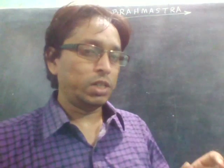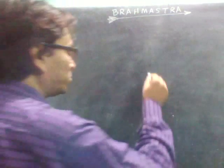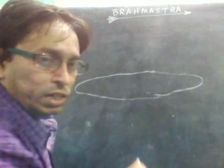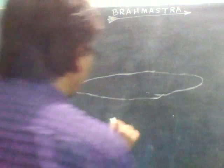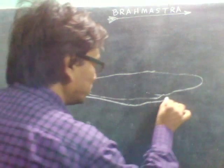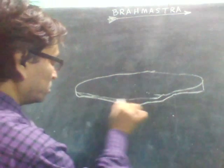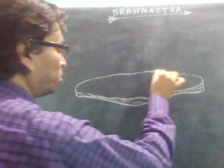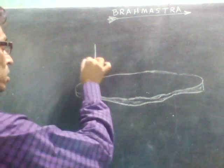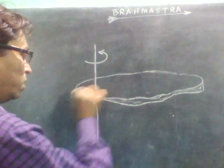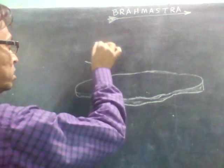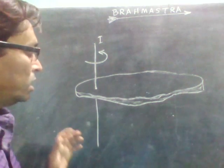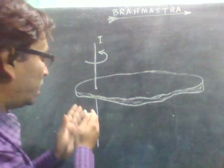Let us see what the parallel axis theorem is. Suppose this is a rigid body rotating about this axis. We know the moment of inertia of the body about this axis, say the moment of inertia is I. Now we want to find its moment of inertia about another axis which is parallel to this axis.